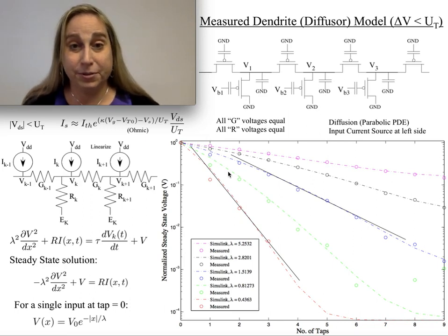So I'd like to look at typical dendrite or diffuser models, particularly when dealing with the change in neighboring voltages being fairly small.